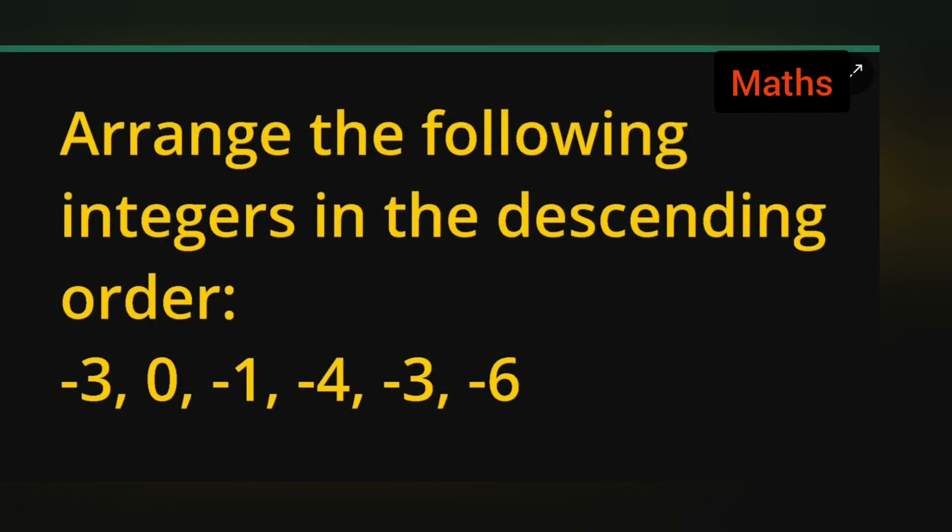In today's class of mathematics, the question is: arrange the following integers in descending order. The given integers are: -3, 0, -1, -4, -3, -6.